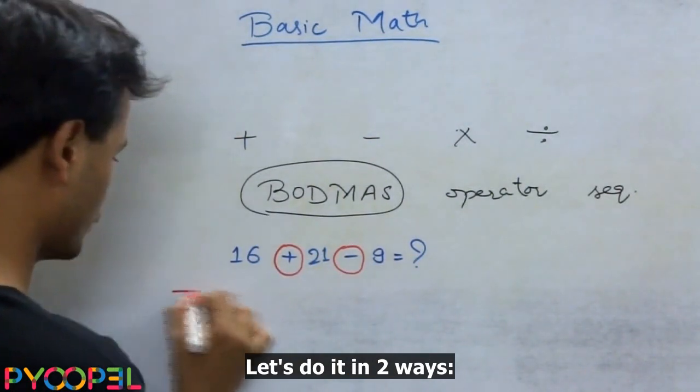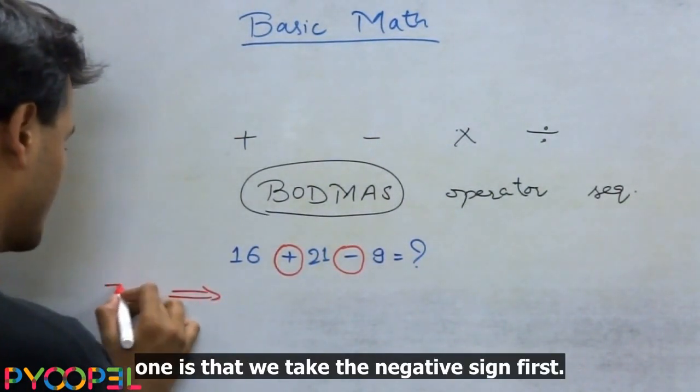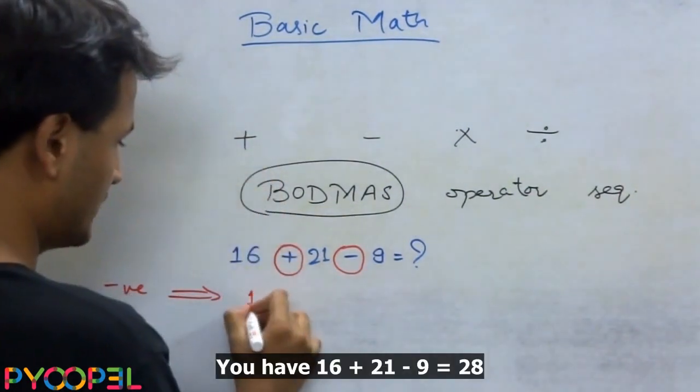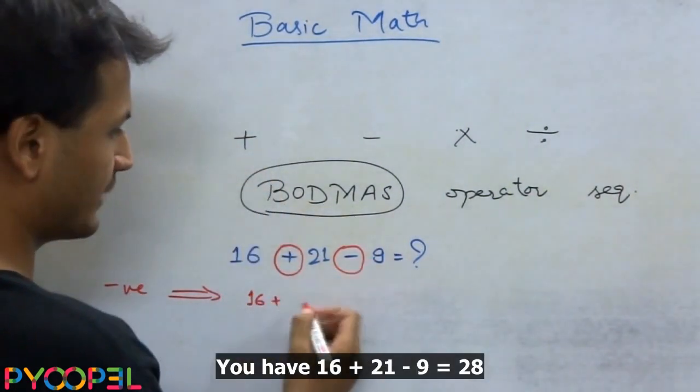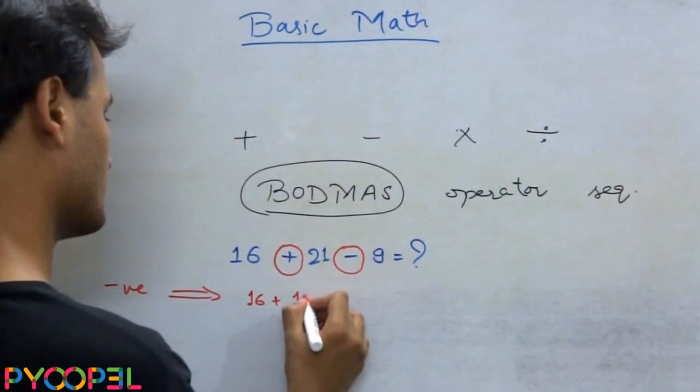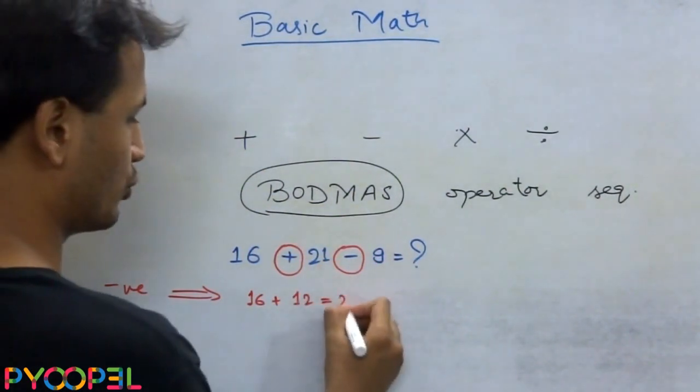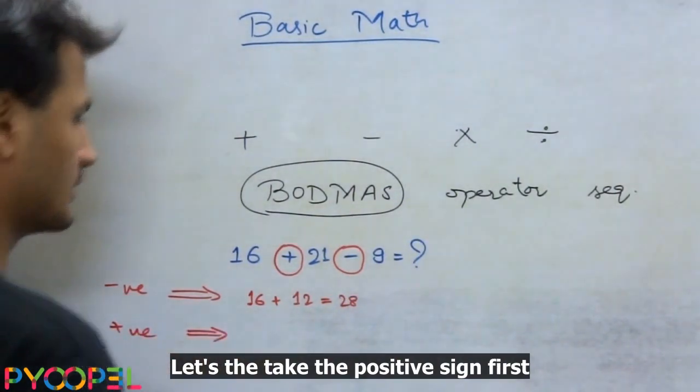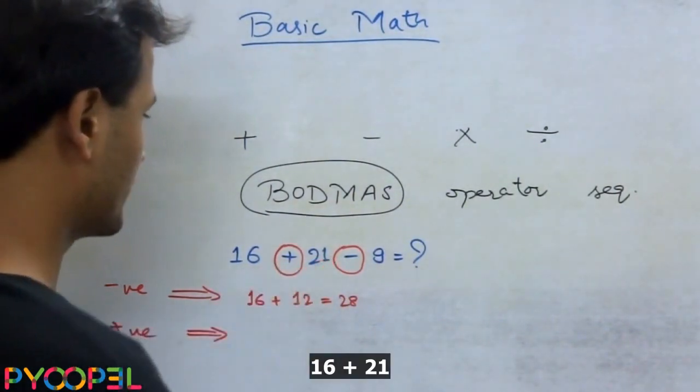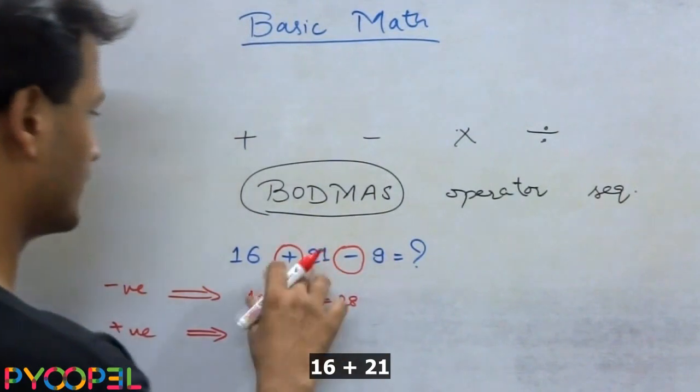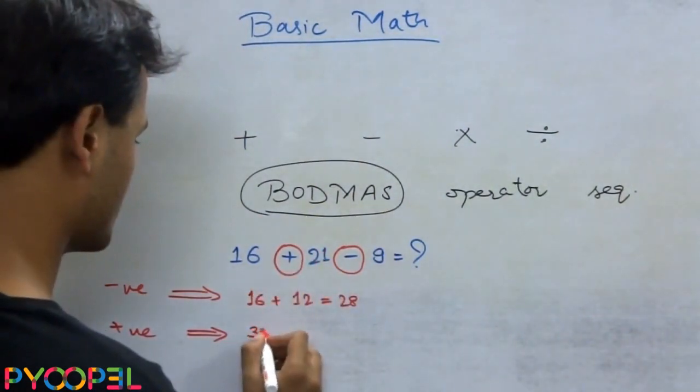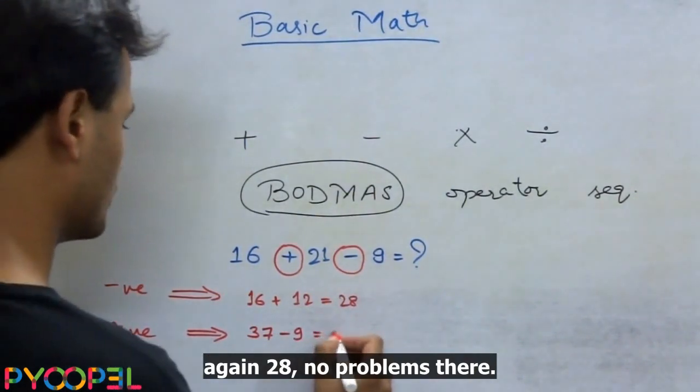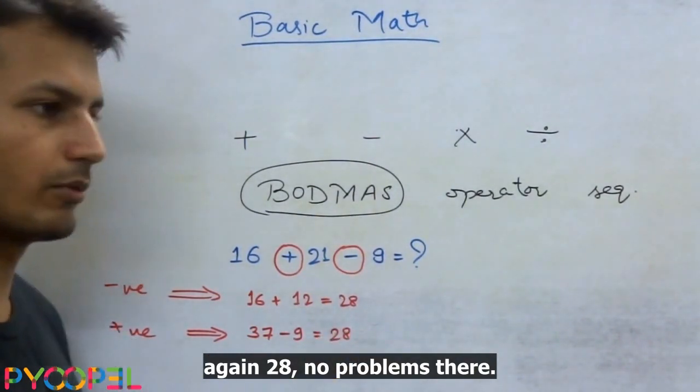Let's do it in two ways. One is we take the negative sign first. So you have 16 plus 21 minus 9 is 12 which gives you 28. Let's take the positive sign first. You take 16 plus 21 that comes out to be which is equal to again 28, no problems there.